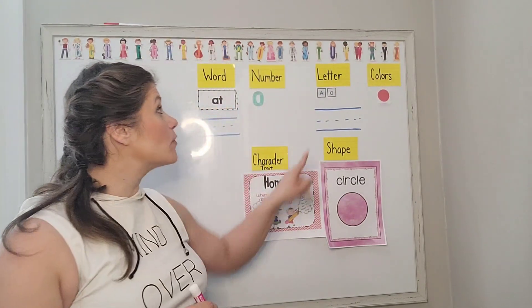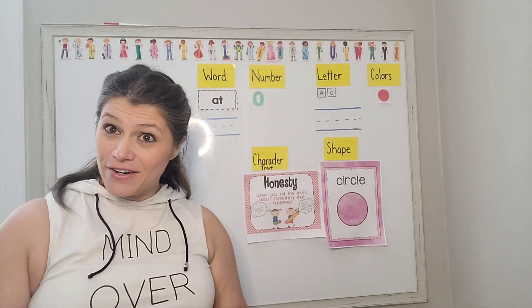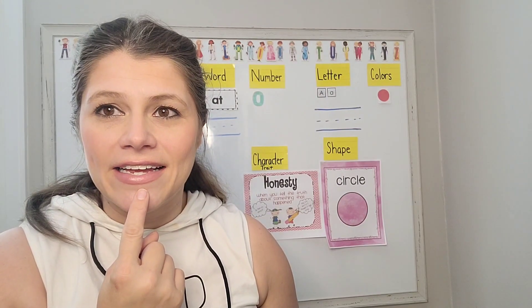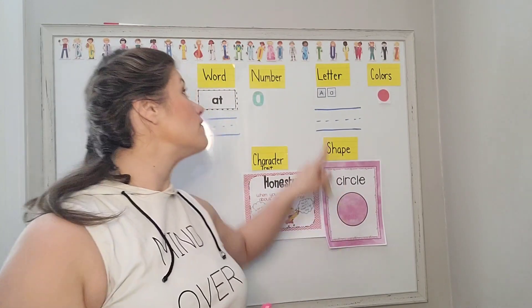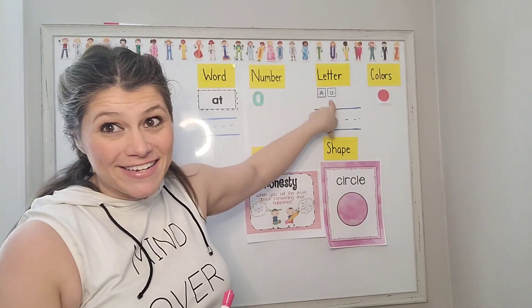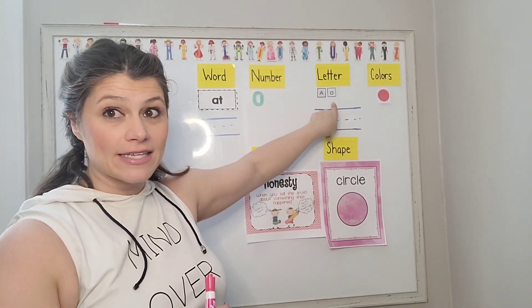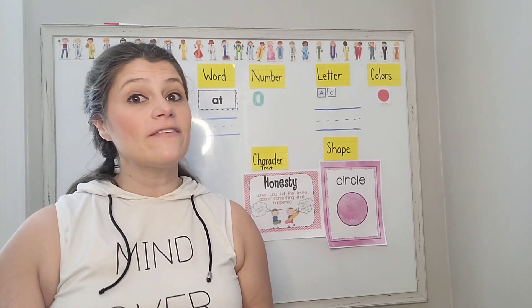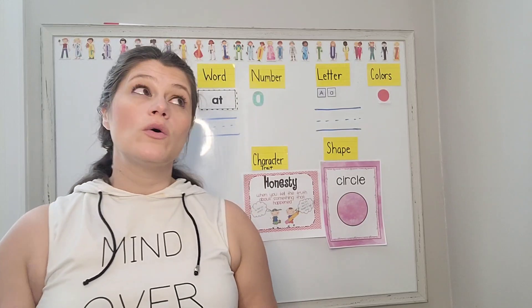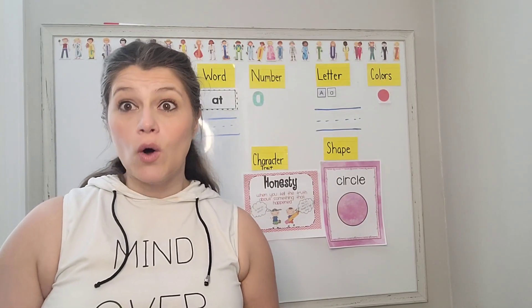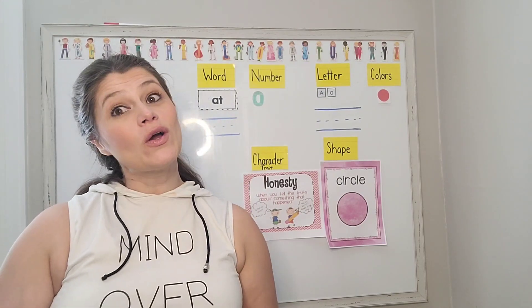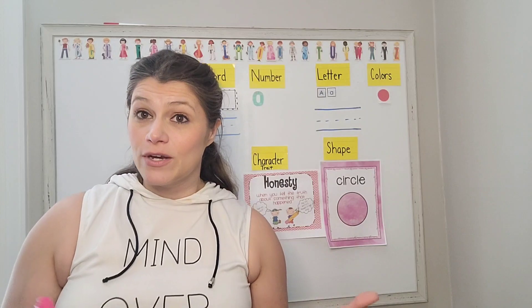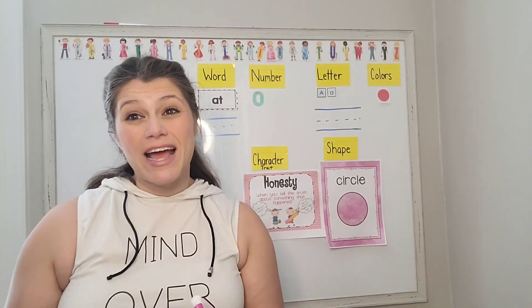The next thing we're going to look at is our letter. Our letter today is A. So remember in our alphabet, we have a big mama A and a little baby A — we have a capital A and a lowercase a. Capital A is used at the beginning of a sentence or if your name starts with A. Your name might be Adam or Abigail or Alicia or Aaron or lots of other names. If your name starts with A, then it's going to be a capital A. Lowercase a's are the letters throughout our name — if there's an A at the end, it's lowercase.